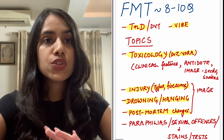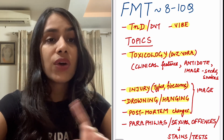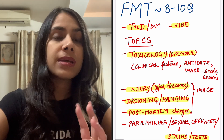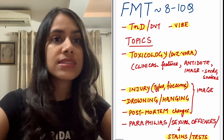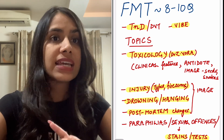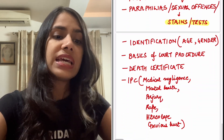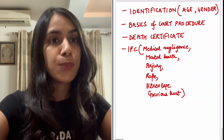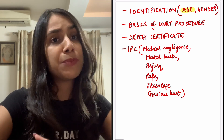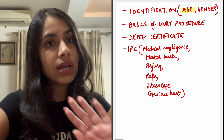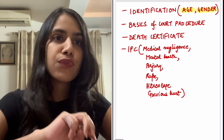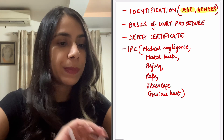In paraphilia and sexual offenses, one thing everybody forgets to do are the stains and tests — like barbario, hemin crystal, florence test, sperm and picret stains. Questions do come from these — it's a small topic, so do it. Then identification is again important: age estimation, especially wrist joint, elbow, and hip — these three are a must. Overall age estimation, gender estimation, and some basic things of identification do end up in your paper.